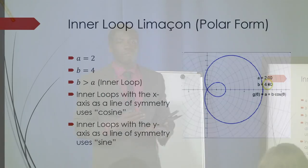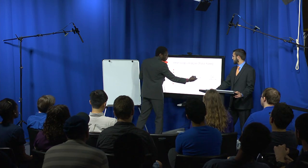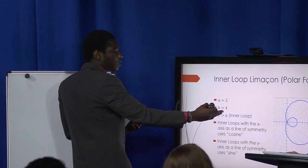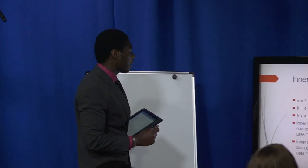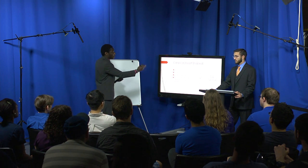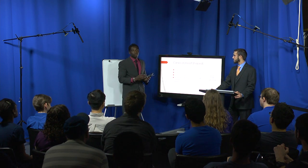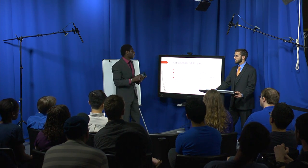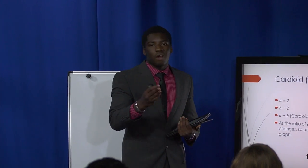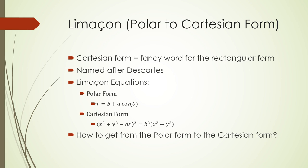Here is an example of an inner loop. The equation has A equal to 2 and B equal to 4, so it is R equals 2 plus 4 cosine of theta. This is also an example of a cardioid, where A equals 2 and B equals approximately 1.99, which is approximately 2, so A and B are approximately the same.